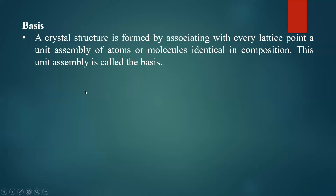The crystal structure is formed by associating with each lattice point a unit assembly of atoms or molecules identical in composition. This unit assembly is called the basis. The structural unit is the basis. In NaCl crystal, NaCl is the basis — that is the structural unit. Repetition of that structural unit gives the crystal. Arrange the lattice points first, then put the basis on each lattice point — that gives the crystal structure.